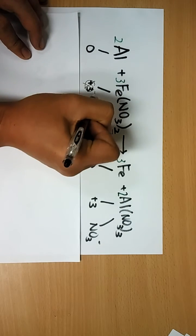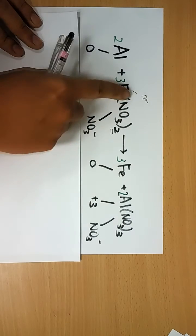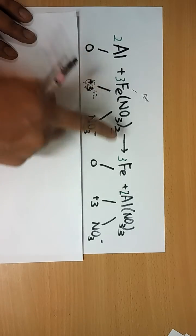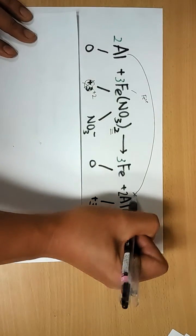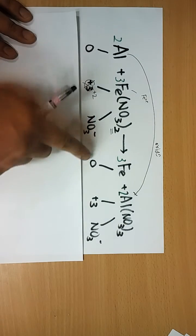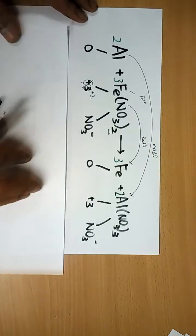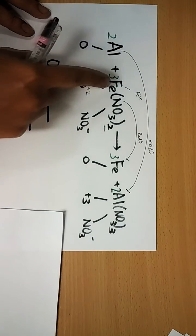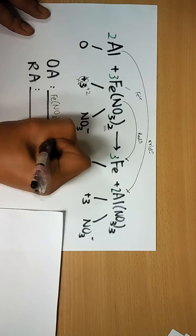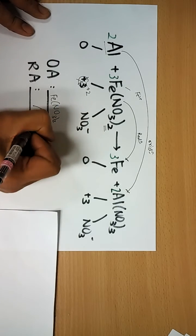Fe should be plus 2, because it's Fe2+ NO3-. Aluminium goes from 0 to plus 3 — that is oxidation. Fe2+ goes from plus 2 to 0 — that is reduction. The oxidizing agent is the one that is reduced, so you write the whole compound: iron(II) nitrate. The reducing agent is the one that is oxidized, which is aluminium.